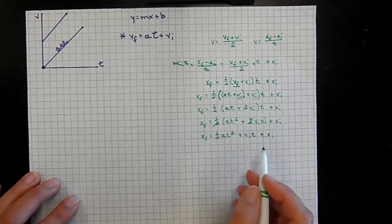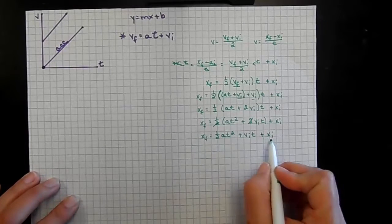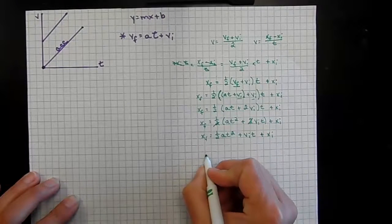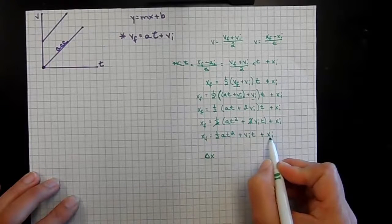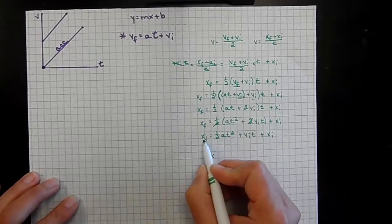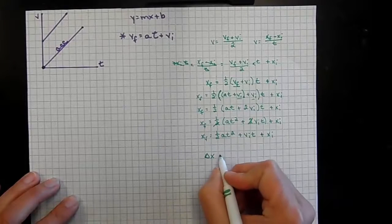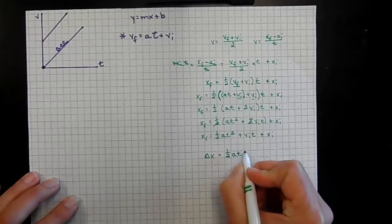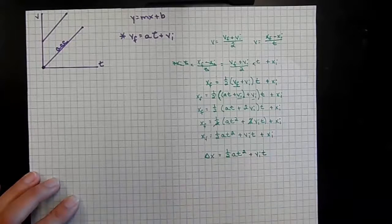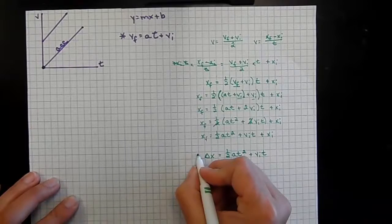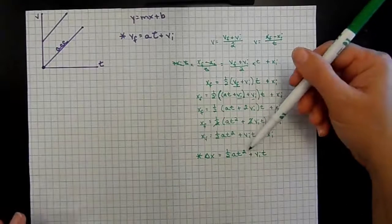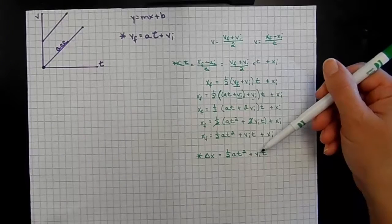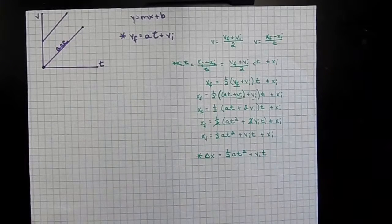This gives us an expression for change in position. If we bring the initial position over and subtract it from final position, that's delta-x — our change in position. So: Δx = ½·a·t² + Vi·t. This is our second useful equation, relating change in position to time, acceleration, and initial velocity. A lot of times we start from rest, so initial velocity is zero and we can ignore that term.